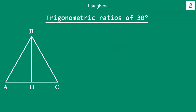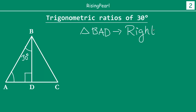Let's give ourselves a little more space. We have found that this angle is 30 degrees, this angle is 60 degrees, and this angle is 90 degrees. Triangle BAD is a right triangle because angle D in BAD is 90 degrees. With one angle being 30 degrees, if we know the sides, we can find all the trigonometric ratios of 30 degrees.